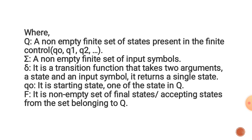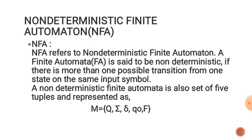Delta (δ) is a transition function that takes two arguments: a state and an input symbol. It returns a single state. q0 is the starting state, one of the states in Q. F is a non-empty set of final states, also called accepting states, belonging to Q.